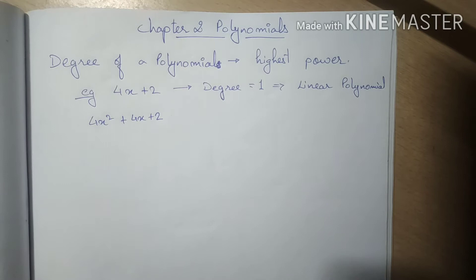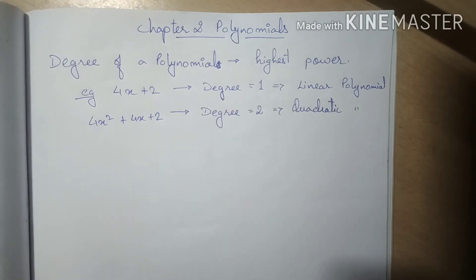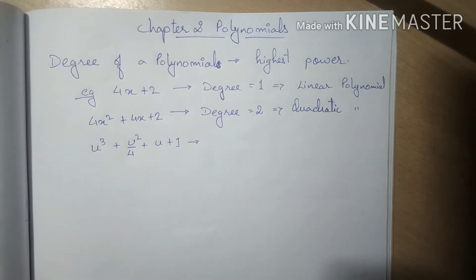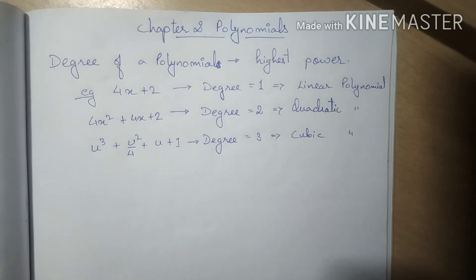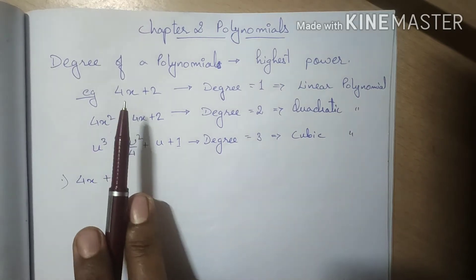A polynomial with variable x and highest power 2 has degree 2 and is called a quadratic polynomial. Similarly, a polynomial with variable u and highest power 3 is known as a cubic polynomial. We can continue further — the next would be biquadratic — but those names are not required for now.